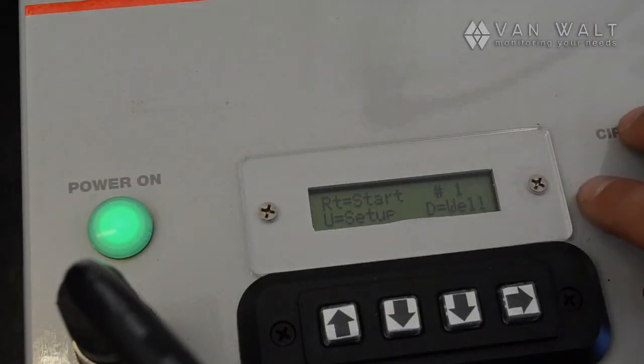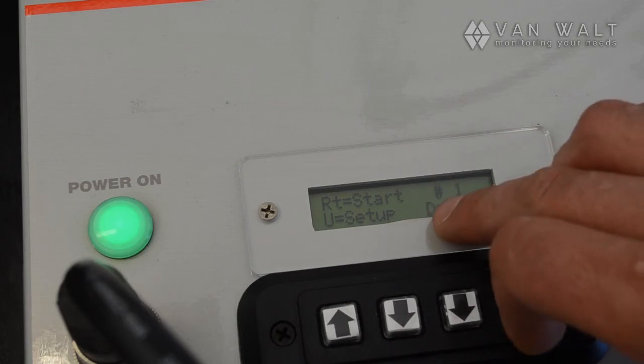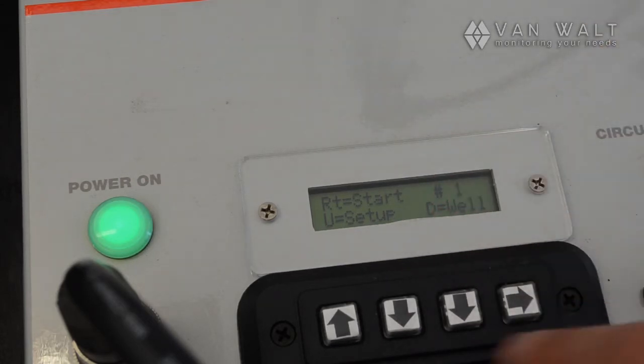Okay, let's have a look at the dry run function. So in order for the dry run function to be active, we need the set speed to be more than 100. So we're in well option one. Let's go up to setup.